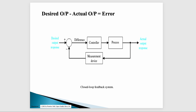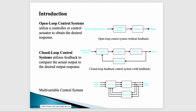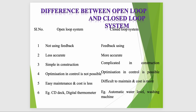This system is known as the closed loop feedback system. We have already discussed the open loop system and the closed loop system. Now the difference between them: the open loop system does not use any feedback, while the closed loop system uses the feedback system. Closed loop is more accurate because we get feedback if there is any error. The construction of the open loop system is very simple, while the construction of the closed loop system is a little more complicated.